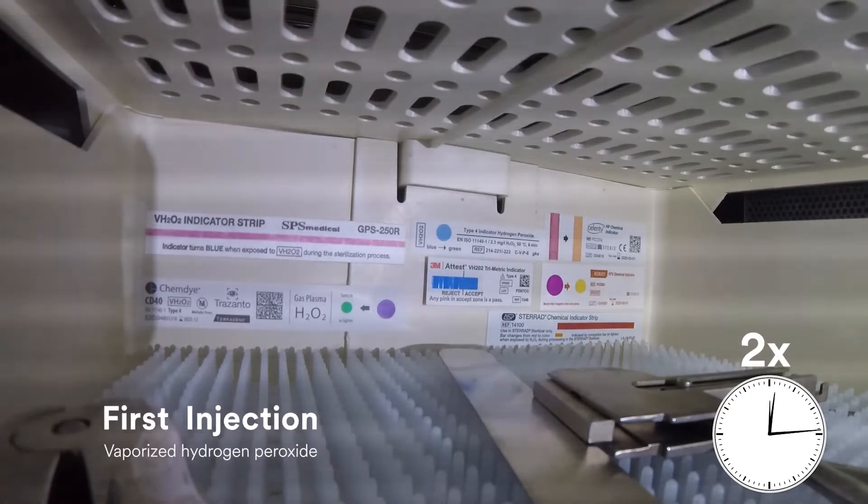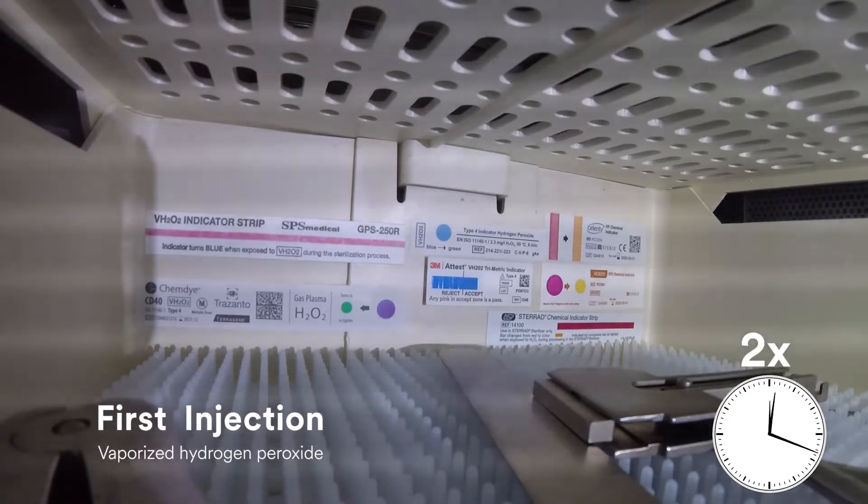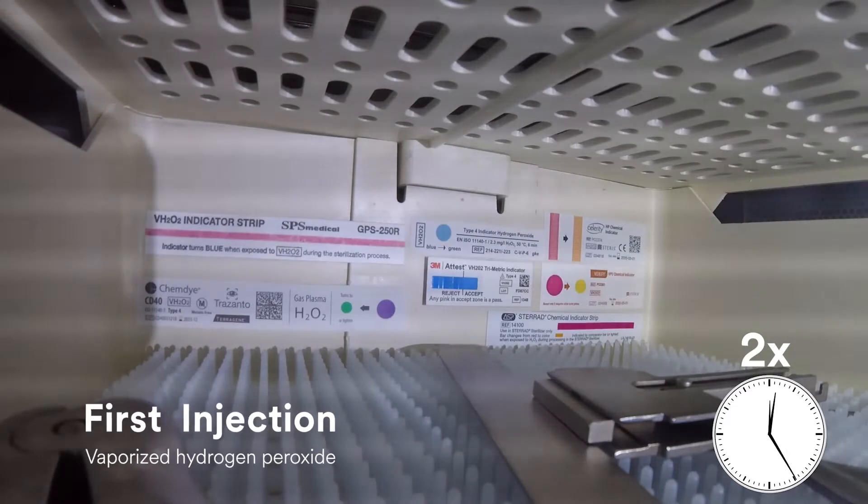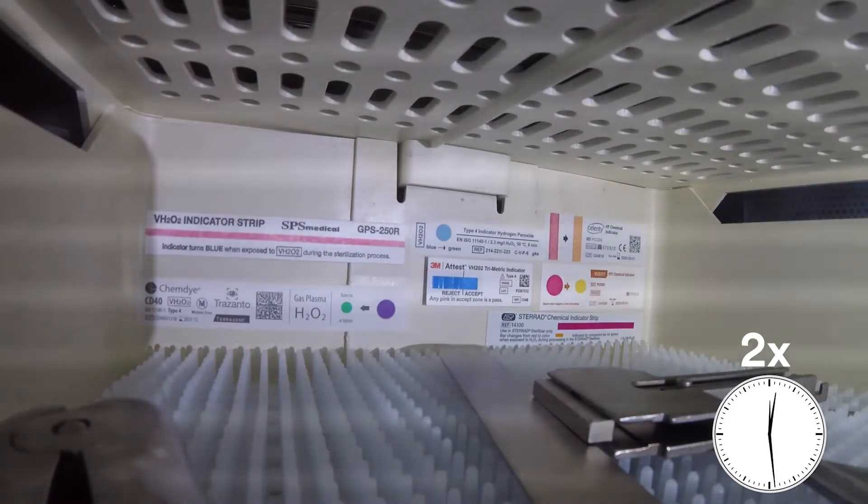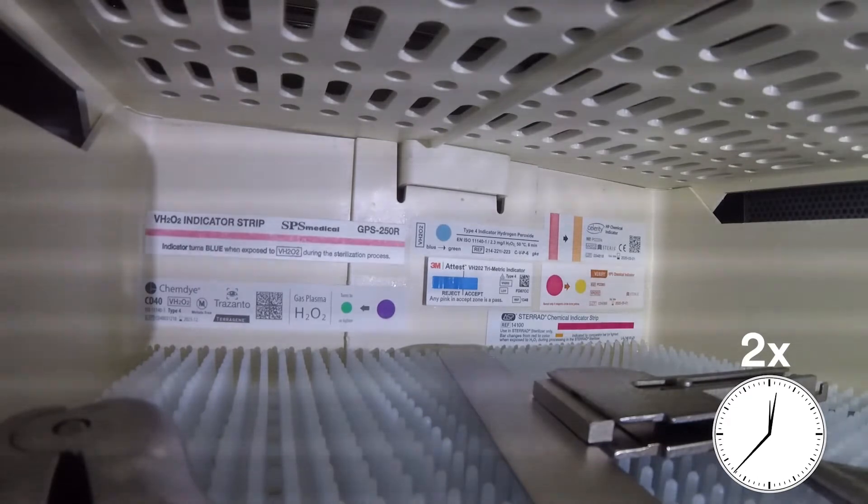The cycle proceeds with the first injection of vaporized hydrogen peroxide. The vaporized hydrogen peroxide disperses throughout the tray and instruments and begins to react with the CIs, and a color change is observed on the CIs.